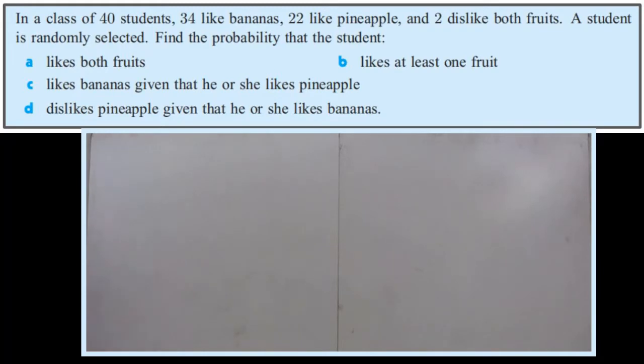A student is randomly selected. Find the probability that the student: A) likes both fruits, B) likes at least one fruit, C) likes bananas given that he or she likes pineapple, and D) dislikes pineapple given that he or she likes bananas.